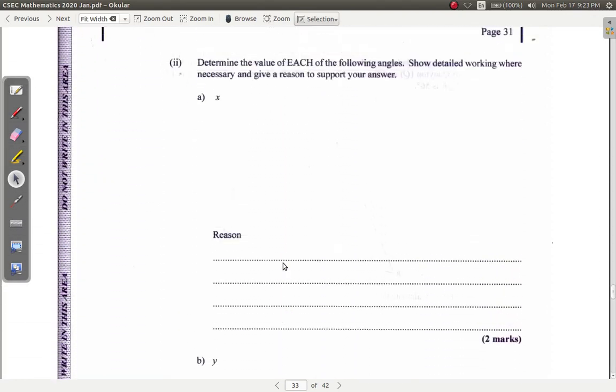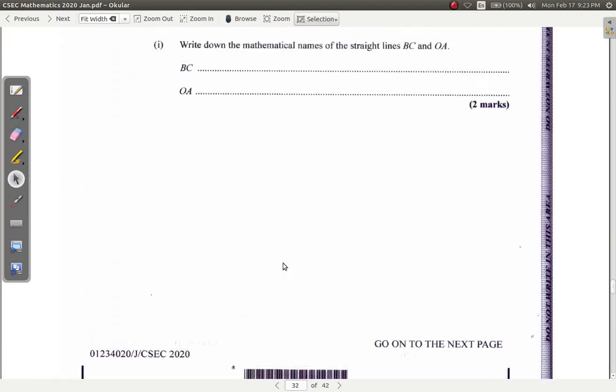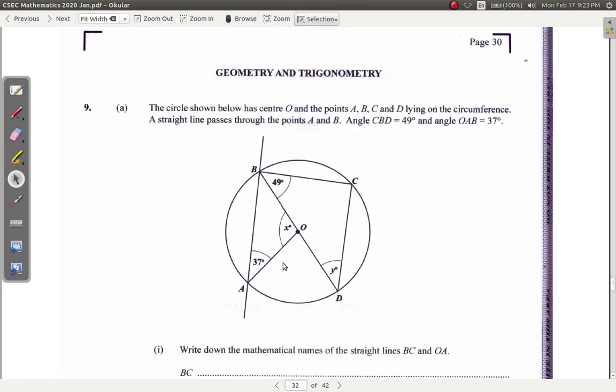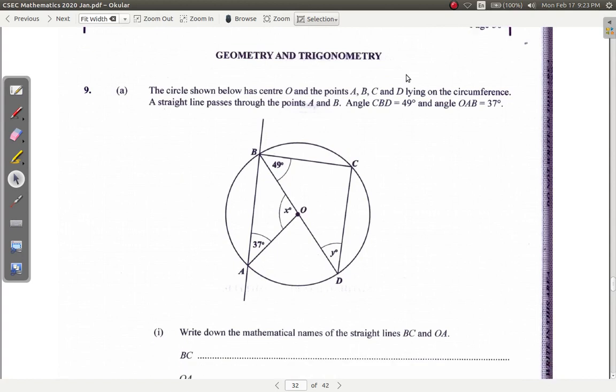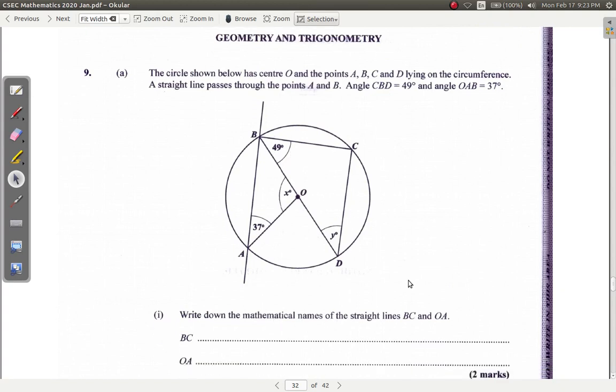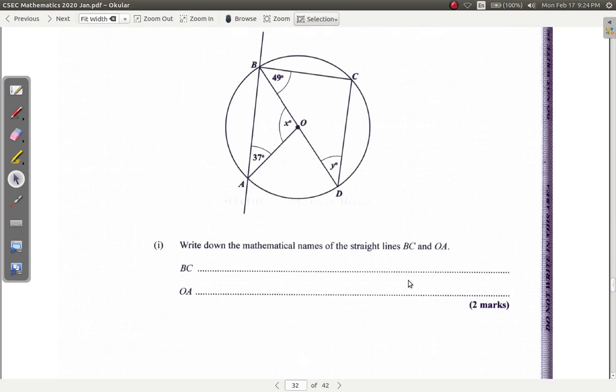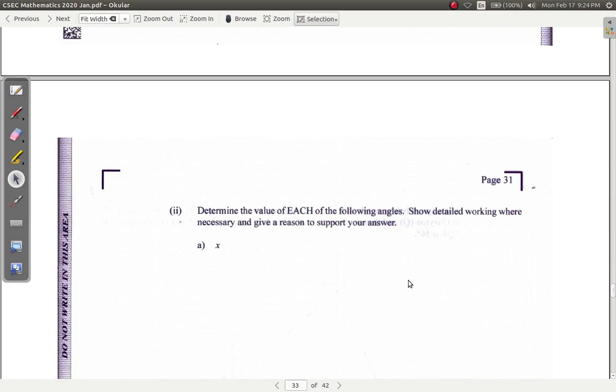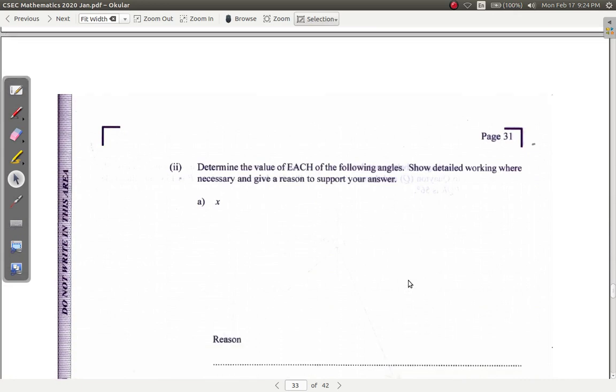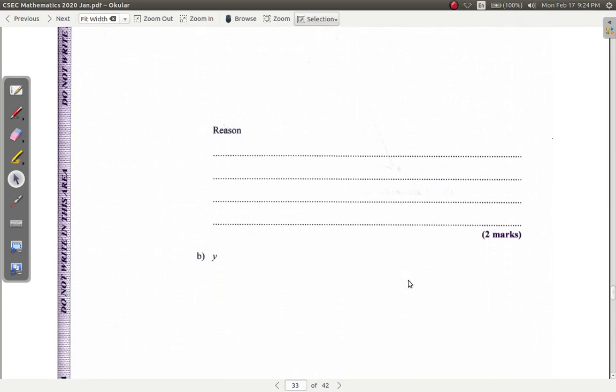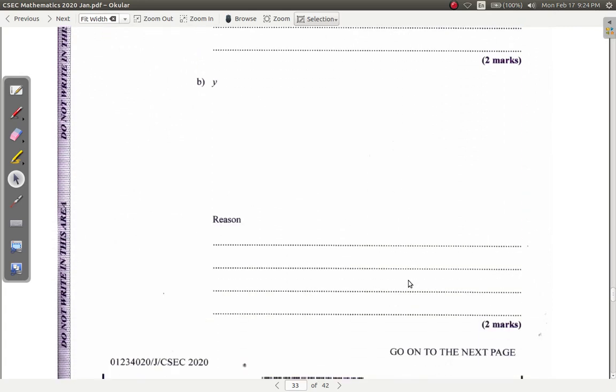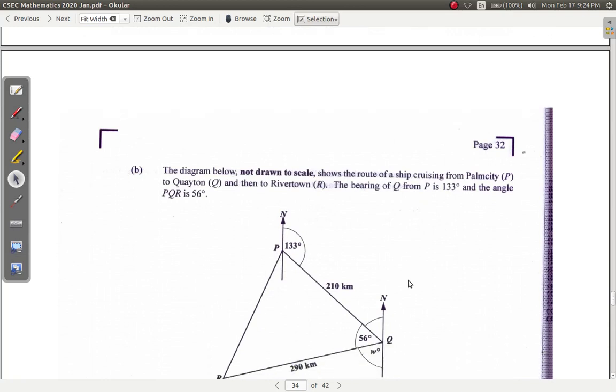So question 9 - geometry and trigonometry question. You have the circle, the angles. Write down the mathematical names of the straight lines BC and OA. Determine the value of each of the angles, show detail working where necessary and the reason why.